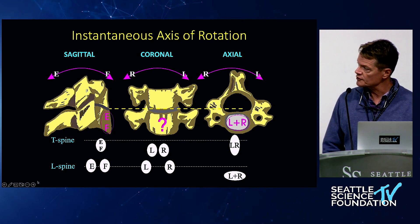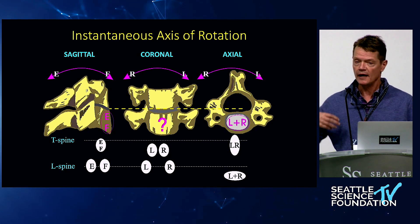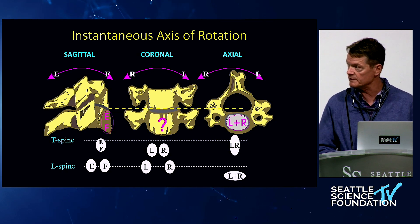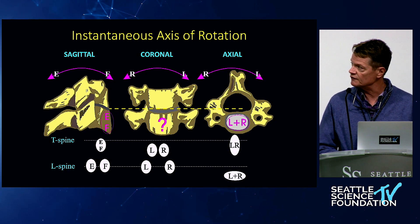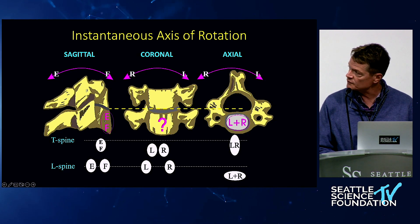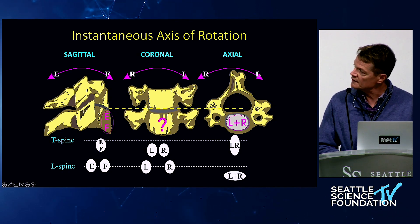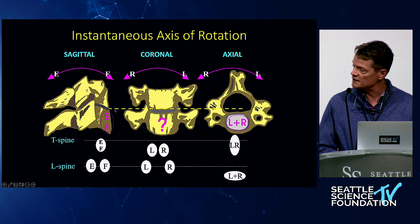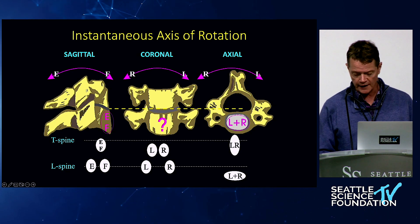Under traumatic forces, the spine first follows its normal biomechanical pathway, then as force increases it exceeds that pathway and failure occurs — ligamentous or bony. The most common subaxial fracture patterns involve flexion, where the instantaneous axis of rotation is in the vertebral body. Hyperflexion causes compression because the axis is in the body, whereas in extension the axis is way in front, pivoting on the facet joints.